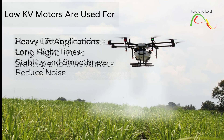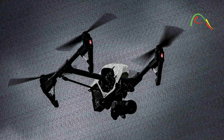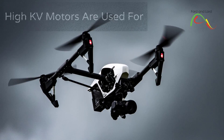Low KV motors typically produce less noise compared to high KV motors when spinning at the same RPM. This can be advantageous in scenarios where noise reduction is essential, such as wildlife monitoring or aerial surveillance. High KV motors are typically used in smaller drones, especially those designed for racing, freestyle, or acrobatic flying.